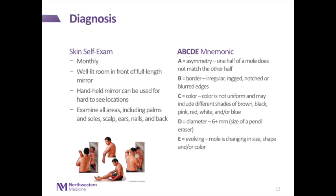We often tell patients about the ABCDE mnemonic. A is for asymmetry, in which one half of the mole does not match the other half. B is for borders — if it has irregular, ragged, notched, or blurred edges, this is more concerning. C is for color — if the color is not uniform and you can have different shades of black, brown, pink, red, white, or blue. D is for diameter — if it's greater than six millimeters, which is the size of a pencil eraser. And E is for evolution or evolving — when the mole is changing in size, shape, or color. These are all red flags to identify moles that may be more concerning.